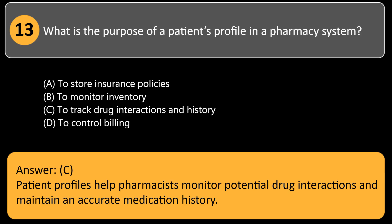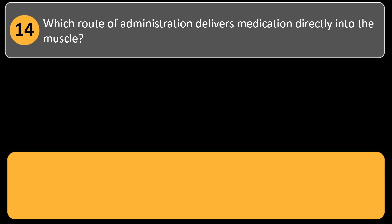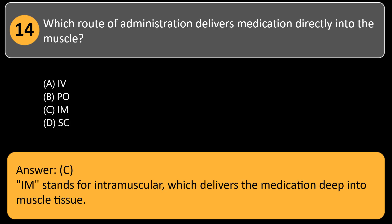Which route of administration delivers medication directly into the muscle? A) PO, B) PA, C) IM, D) SC. Answer: C. IM stands for intramuscular, which delivers the medication deep into muscle tissue.